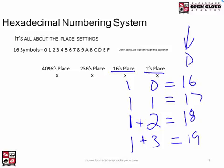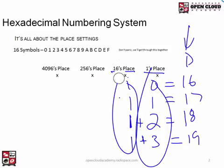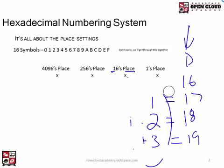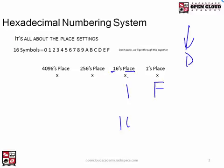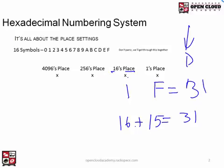Whatever is in the higher position times its place setting, plus whatever is in the lower position times its place setting — then you add those together. For example, 1F in hex: 1 times 16 is 16, and F equals 15 in decimal, so 16 plus 15 is 31. So 1F hex equals 31 in decimal.